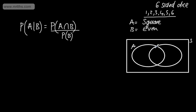We have A and we have B. Putting the numbers in: 1 is a square number but not even, so it goes in A only. 2 is even but not square, so it goes in B. 3 is neither even nor square, so it goes on the outside. 4 is both square and even. 5 is neither, so it goes on the outside. And 6 is even but not square.